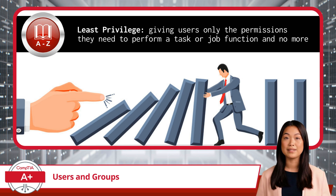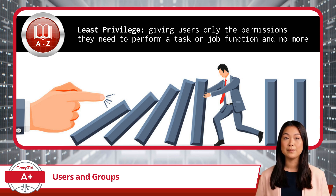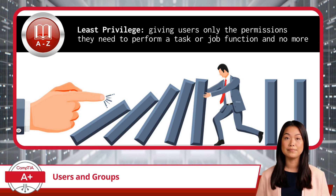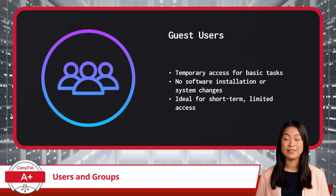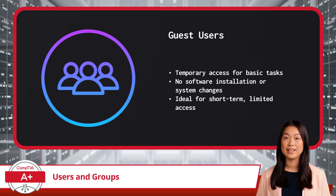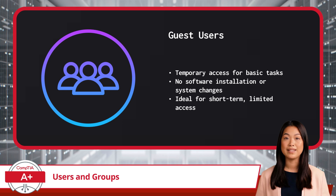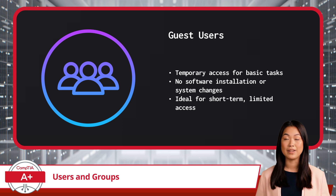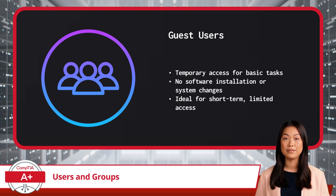By applying least privilege, you reduce the attack surface of your system and keep it more secure overall. Now let's look at the different user access groups and how they fit into this principle, starting from the least access and moving up to administrative access. First up, we have the guest user account. This user group is the most limited in terms of access and is a great example of least privilege in action. This account is designed for temporary use, allowing basic tasks such as browsing the web or accessing shared files, without the ability to install software or make any system changes.